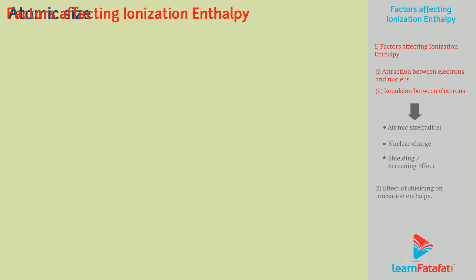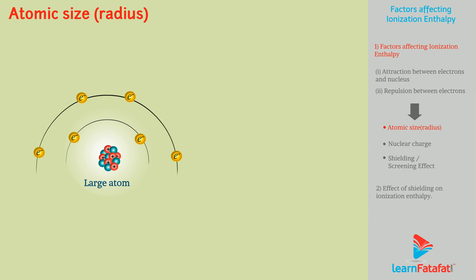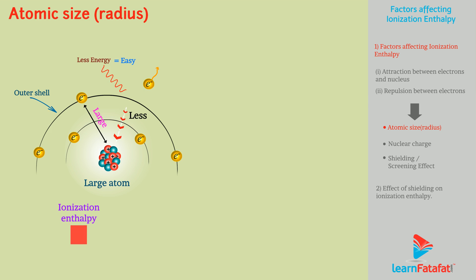Atomic size or radius. When the size of an atom is large, the distance between the nucleus and the outer shell electrons is large. Hence, the attractive forces between the nucleus and outer electrons is less. Due to less attractive force, it becomes easy to remove an electron from the atom. So, ionization enthalpy decreases with increase in atomic size.